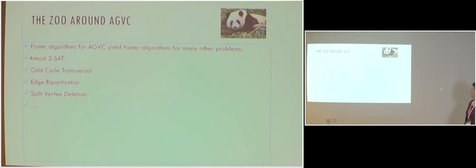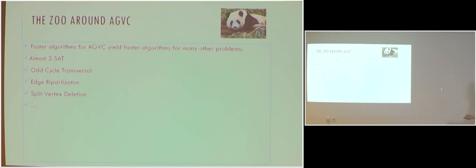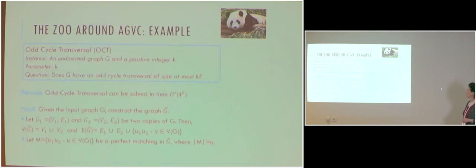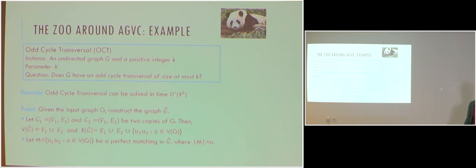Above-guarantee vertex cover has been the center of many developments in parameterized algorithms because faster algorithms for this problem yield faster algorithms for a host of other problems. We are going to focus on one problem to show how it relates to above-guarantee vertex cover: the odd cycle transversal. In this problem, we are given an undirected graph and a positive integer K, and we ask does G have an odd cycle transversal of size at most K — in other words, can we omit at most K vertices so the remaining graph is bipartite?